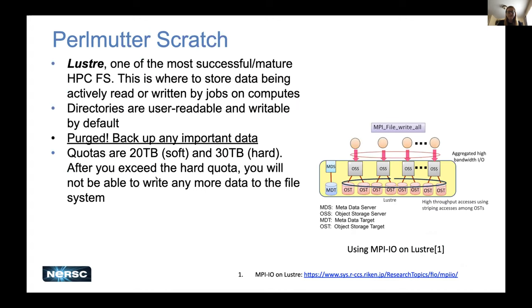Starting at the top of the file system pyramid, we have Perlmutter Scratch. It's Lustre — one of the most successful and mature HPC file systems. This is where you store data that's being actively read or written by jobs on compute nodes. If you're doing a lot of IO and need fast rates, you put it on Perlmutter Scratch. Then when you're done, you move it to a more permanent area, because we do purge.